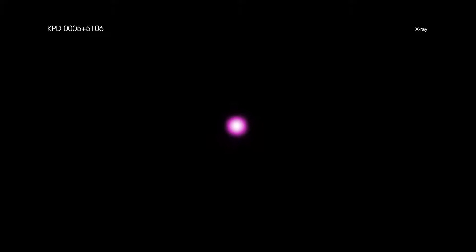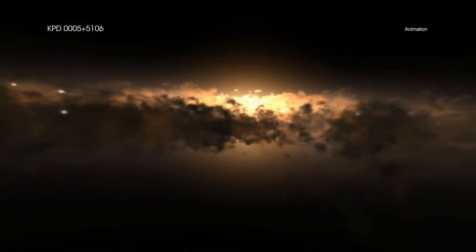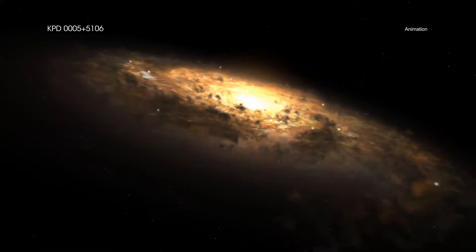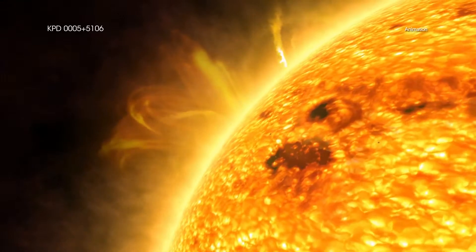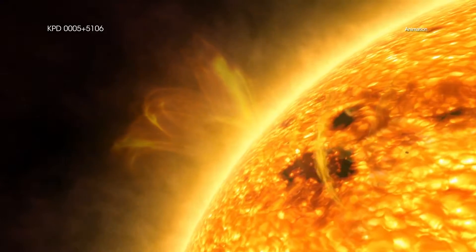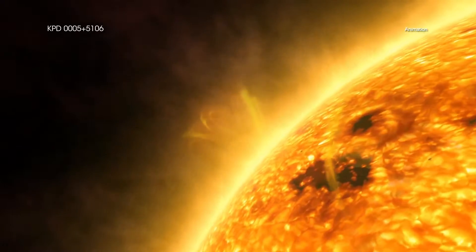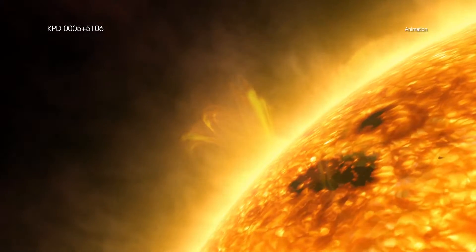KPD-0005-5106, located in our galaxy about 1,300 light-years from Earth, is one of the hottest known white dwarf stars, with a temperature of about 360,000 degrees Fahrenheit. By comparison, the surface of the Sun is about 10,000 degrees Fahrenheit.